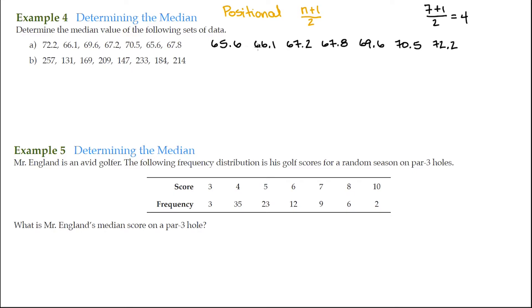So the value, 1, 2, 3, that's the fourth position. So that data value is our median. And what the median does is it cuts the data set in half. 50% of the data values lie to its left and 50% of the data values lie to its right. So it cuts it right in half. So this is our median, 67.8.